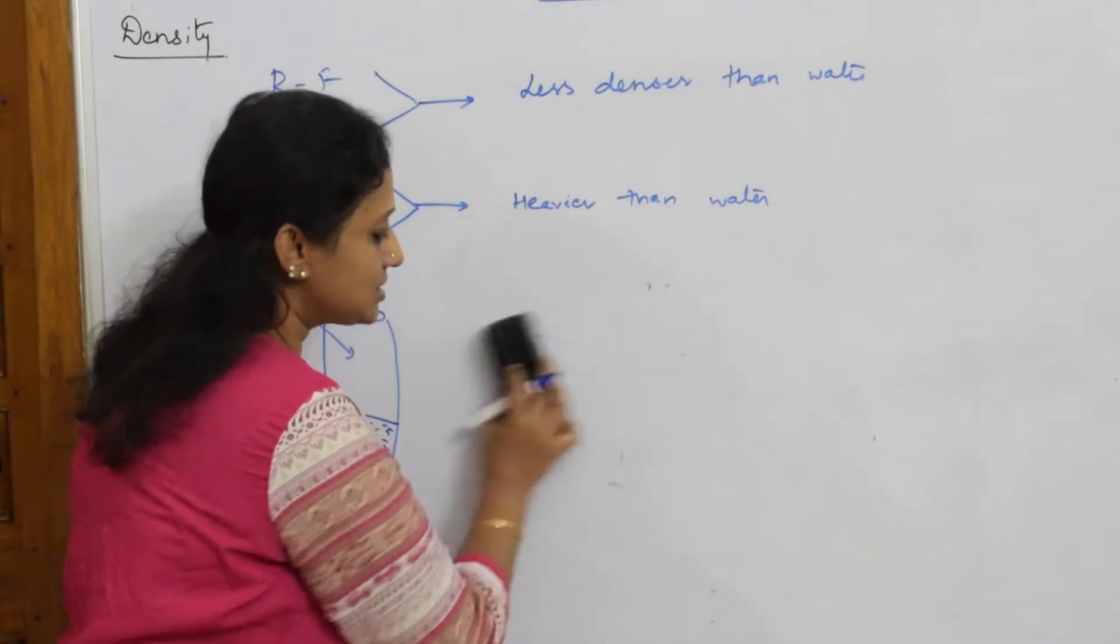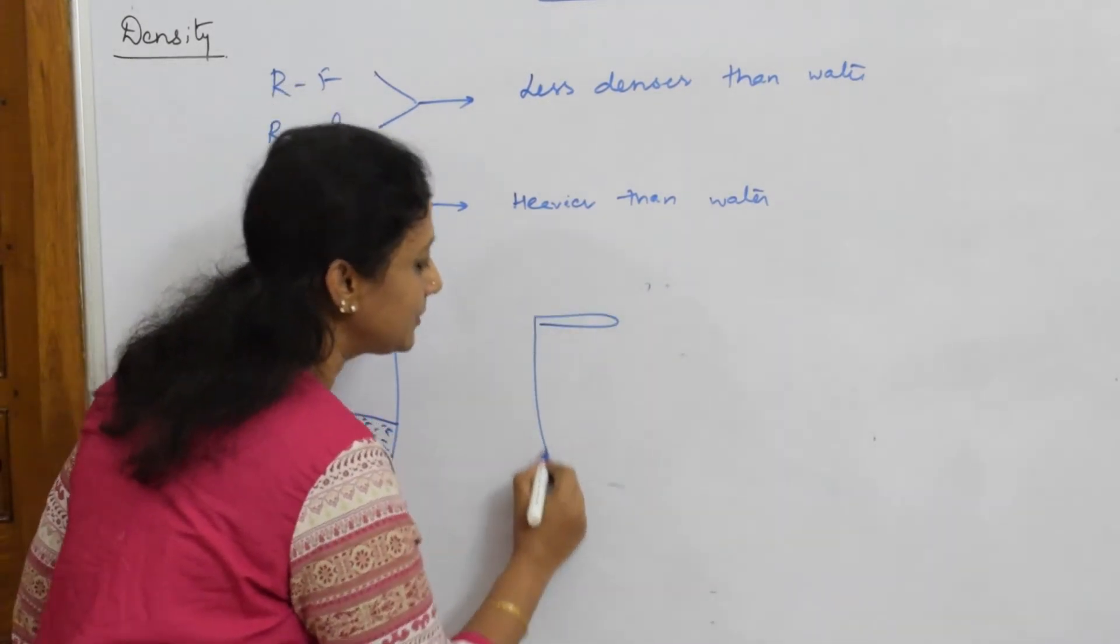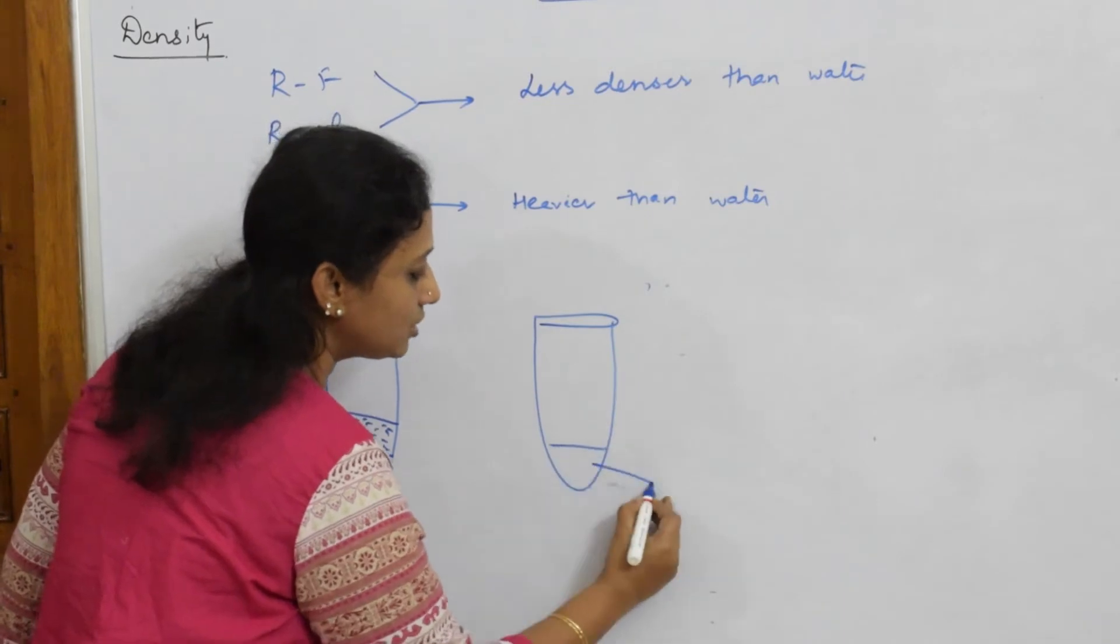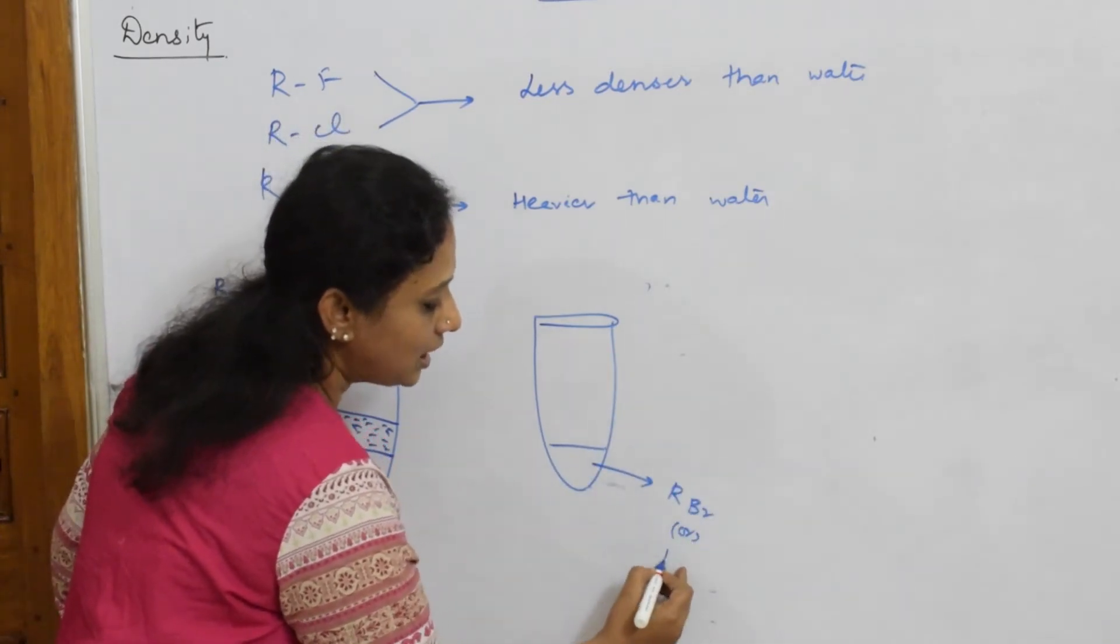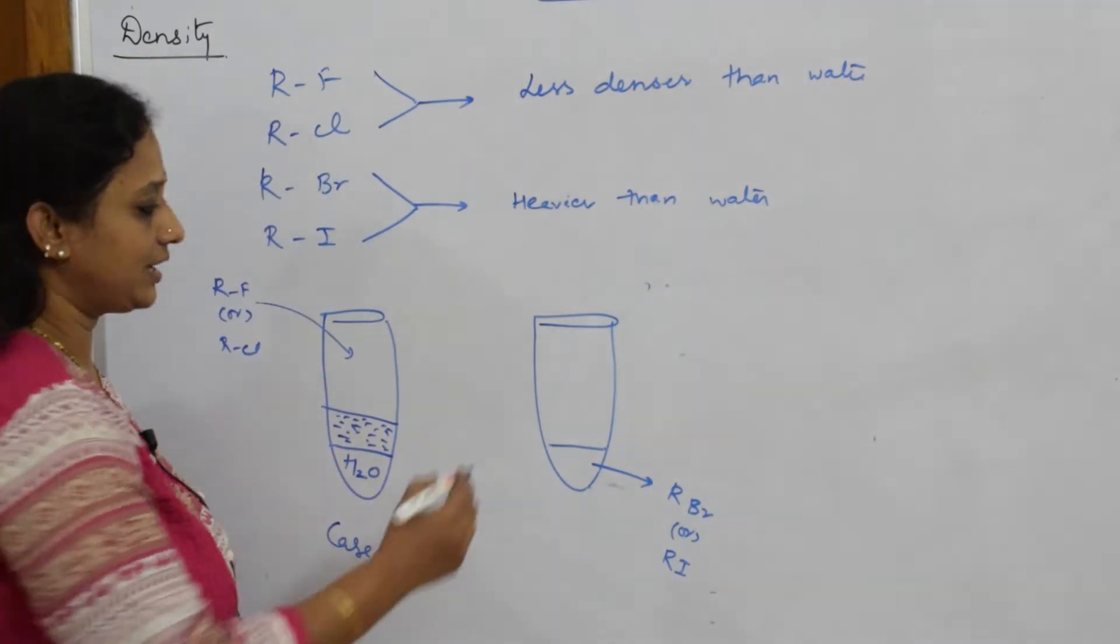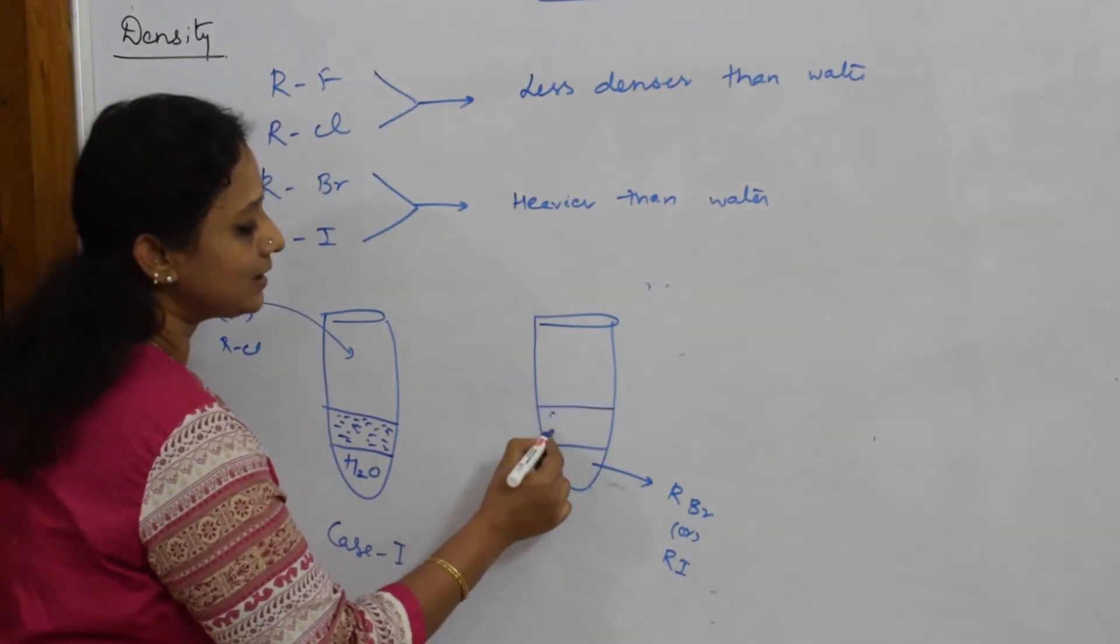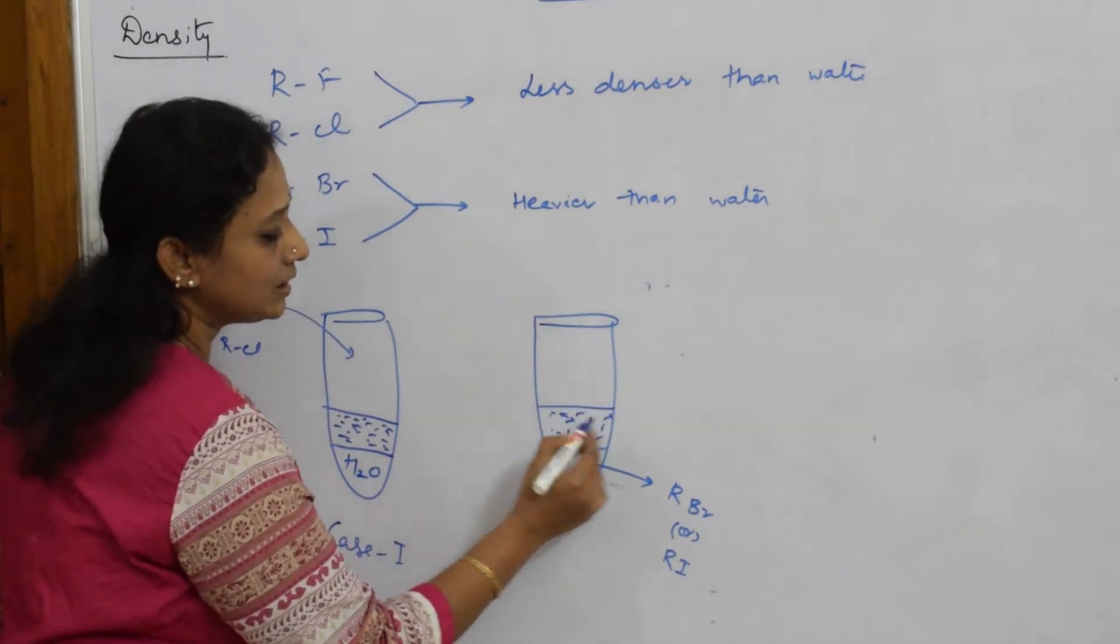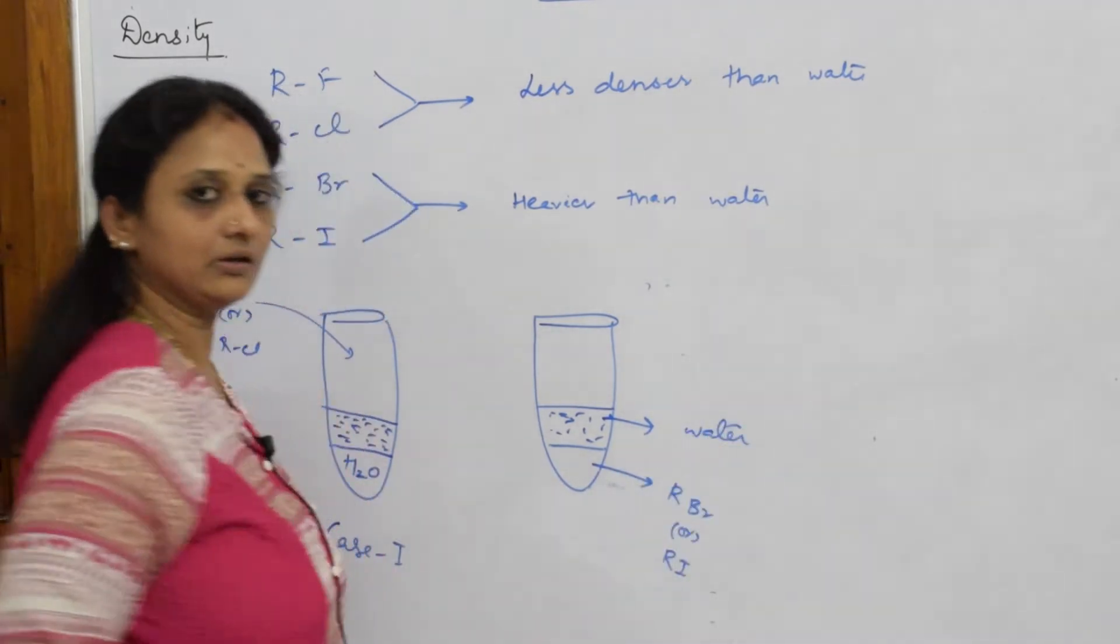To be clear, R-Br or R-I are heavier than water, so you get R-Br or R-I at the base layer and water forms the layer above. When you see these two cases, you can clearly say these are lower haloalkanes and these are higher haloalkanes.